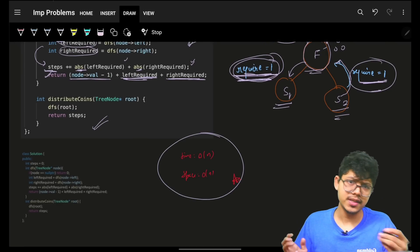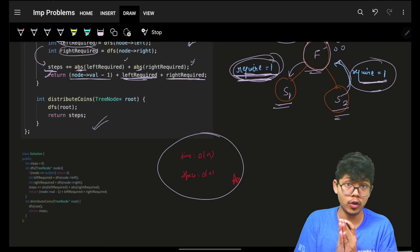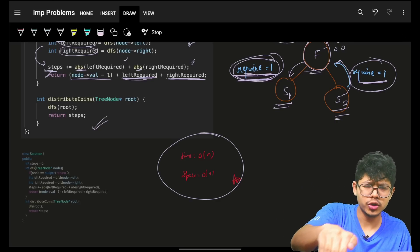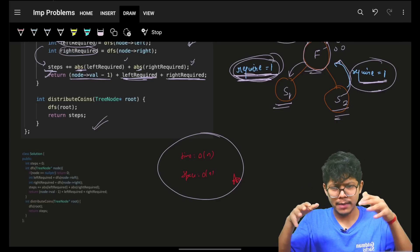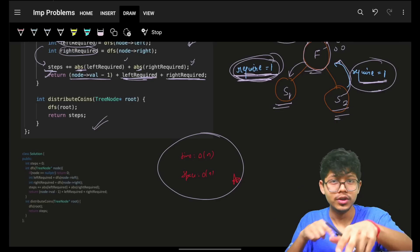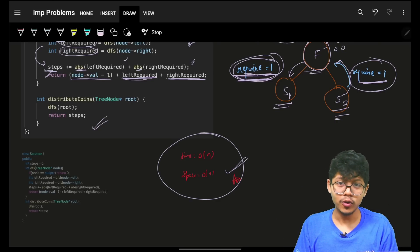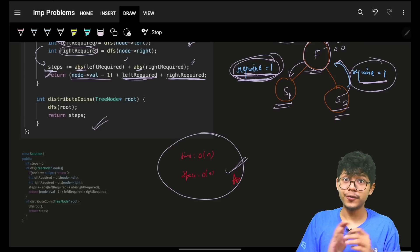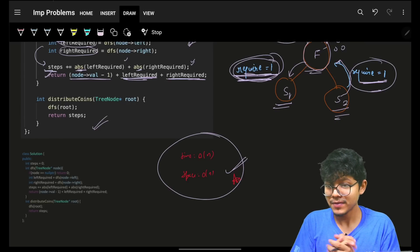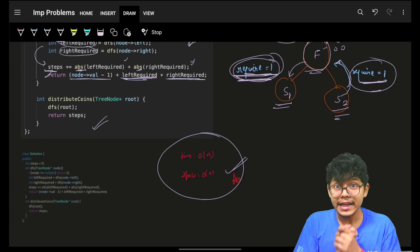The beauty of this problem lies in understanding why there is an absolute value and why not. Time and space complexity: it's a simple DFS, so O(n) time and O(n) space, because a DFS on a skewed tree can have recursive depth of O(n).